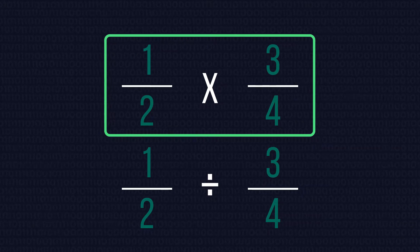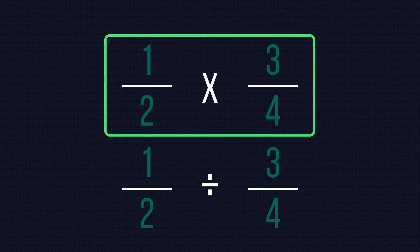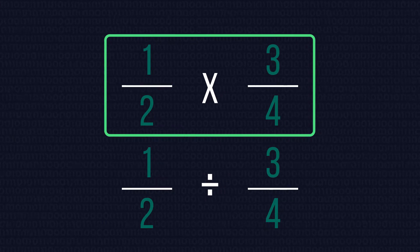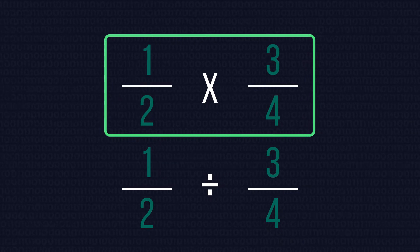To understand why we multiply fractions together in the way we do, we first need to understand multiplying a fraction by an integer.